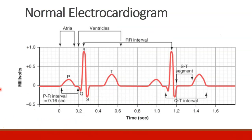Here's that EKG: the P wave for atrial depolarization, the QRS for ventricular depolarization, and the T wave for ventricular repolarization.